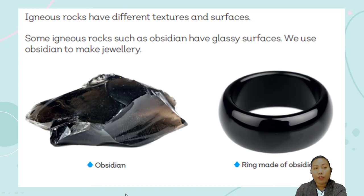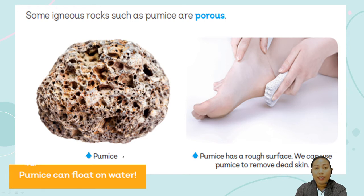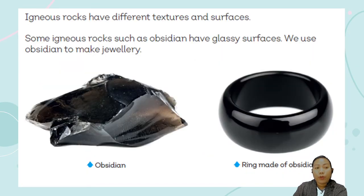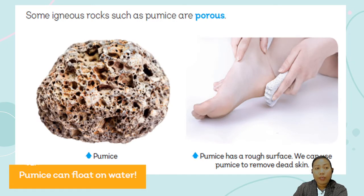Another example of an igneous rock is pumice. Pumice has a rough surface. We can use pumice to remove dead skin. Some igneous rocks such as pumice are porous — they have holes and can break down easily. Pumice can float on water because it is light, compared to obsidian, which is heavier.